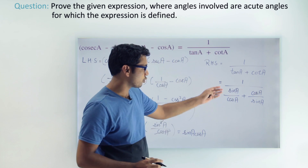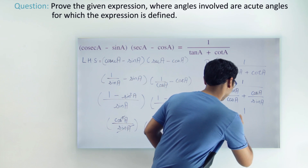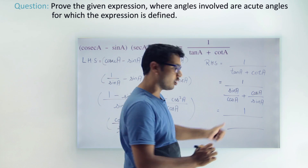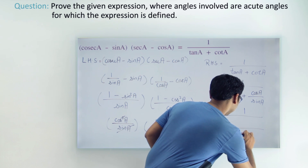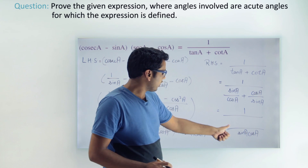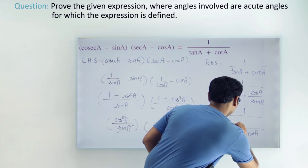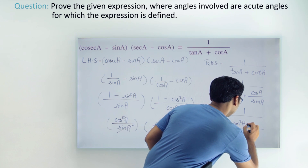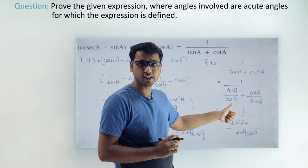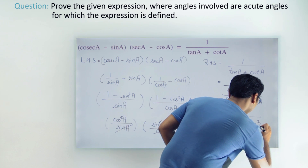Now we can proceed further by taking the LCM of the denominator. The LCM will be sin a times cos a. So we get 1 over (sin squared a plus cos squared a) all divided by sin a times cos a. Here sin a times sin a gives sin squared a, and cos a times cos a gives cos squared a.